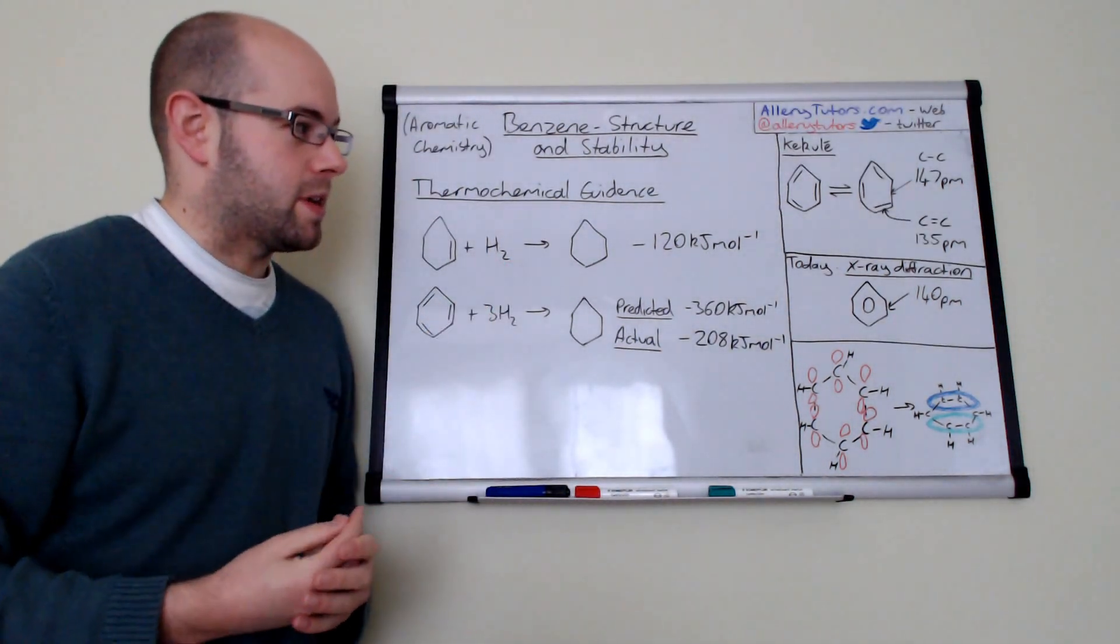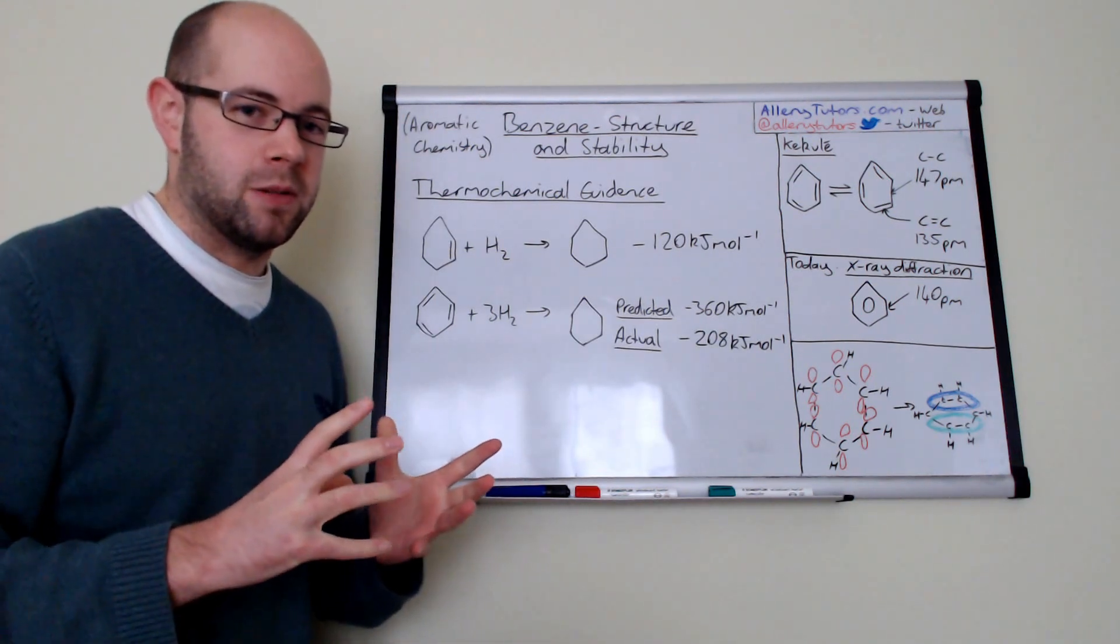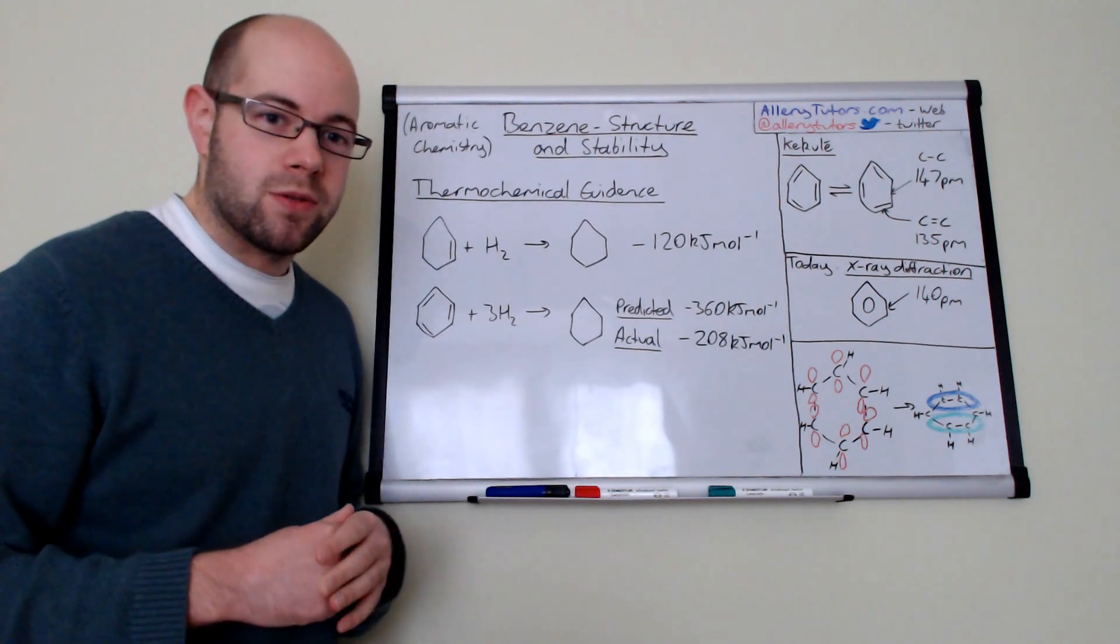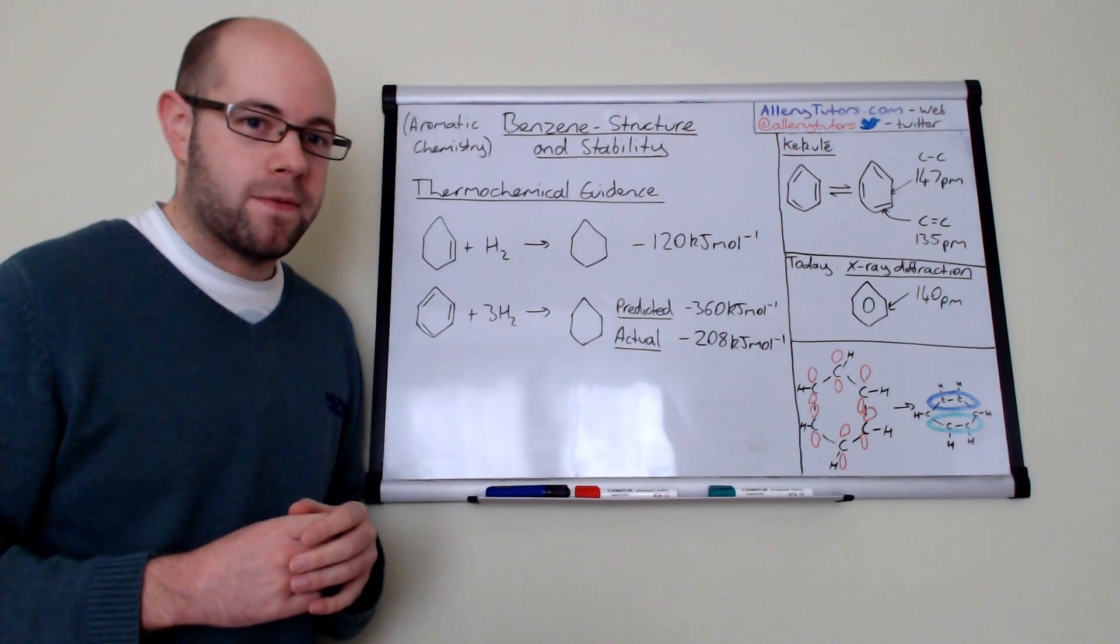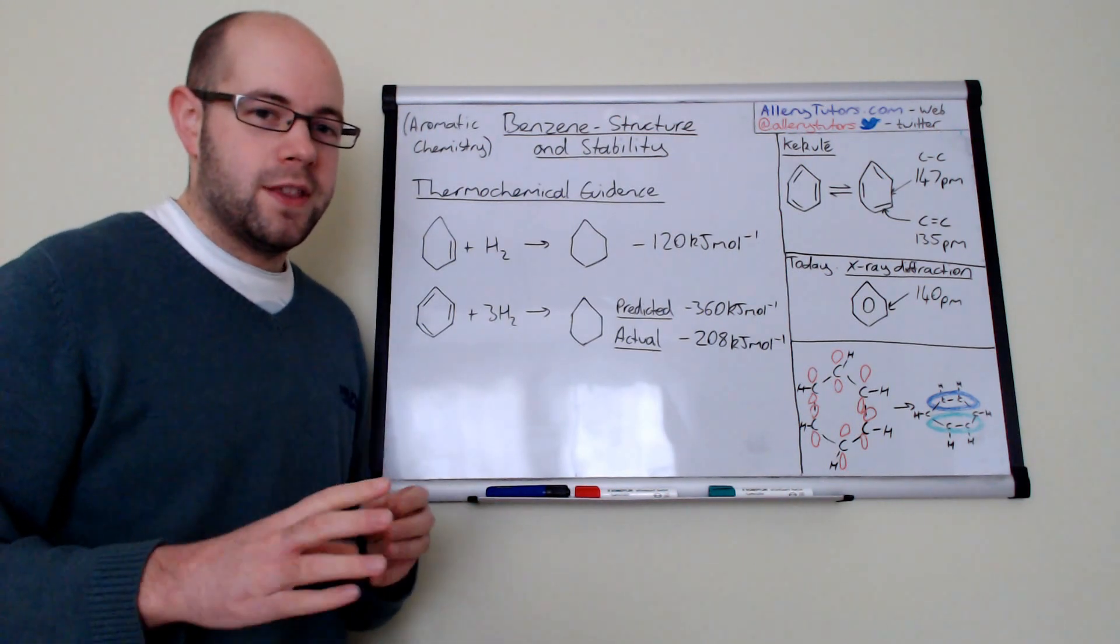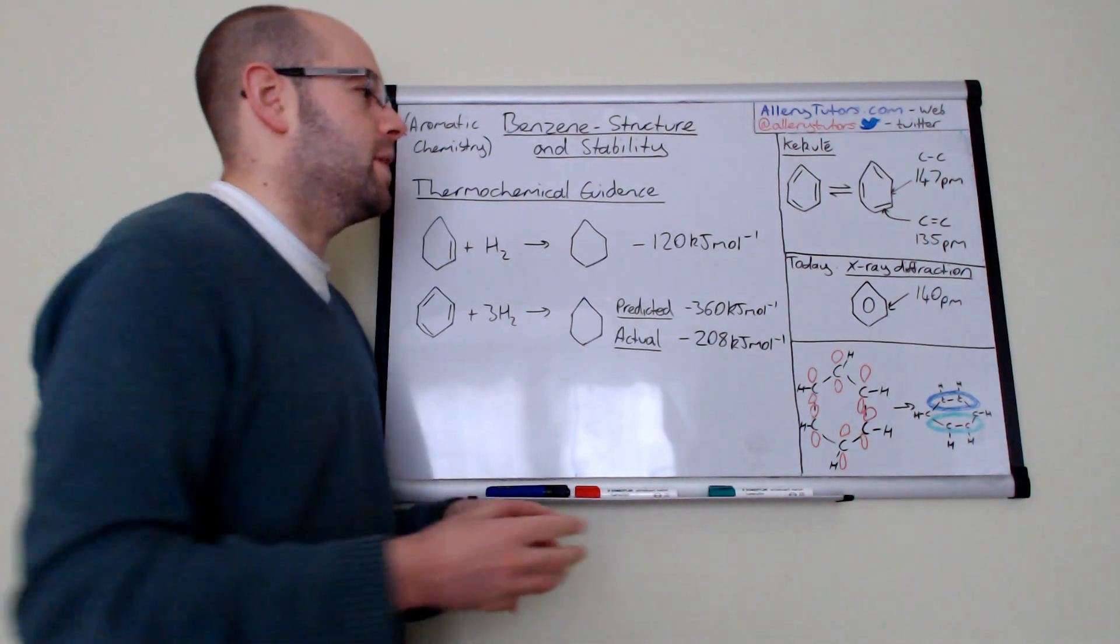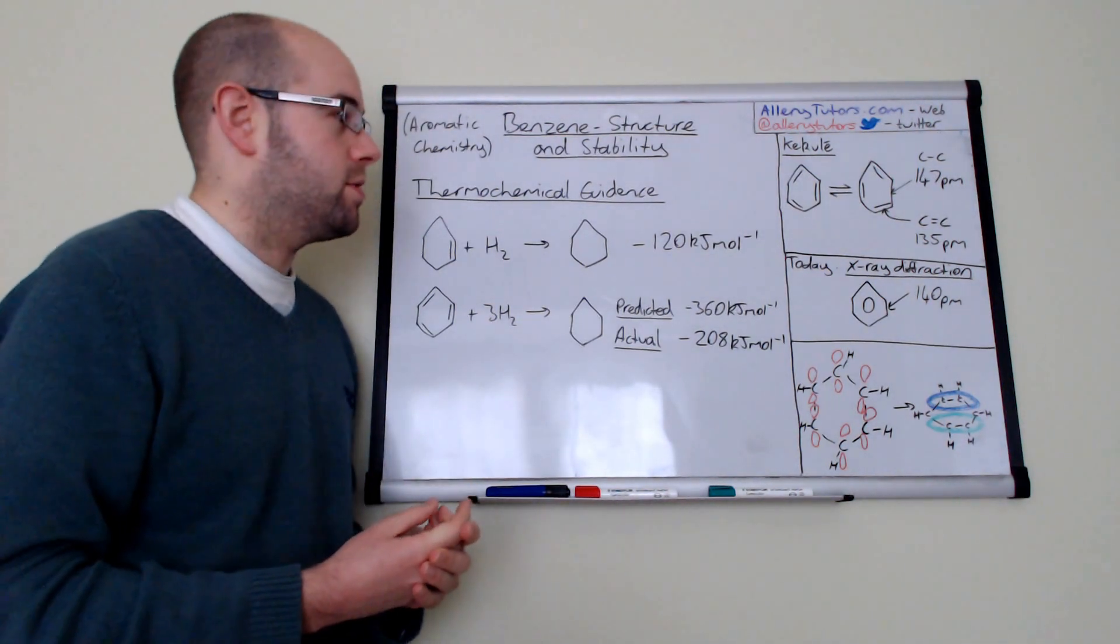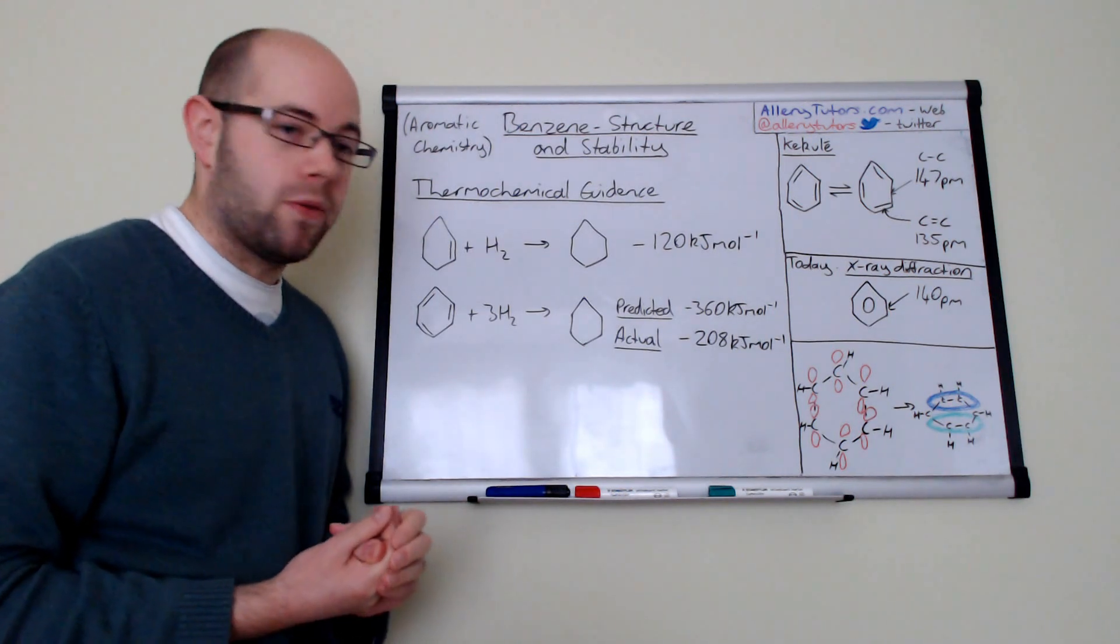We found out that actually it was a symmetrical molecule which immediately suggested that you couldn't have a double and a single bond system as Kekulé suggested. Through infrared radiation we discovered that the bonds were all oscillating at the same frequency, which suggested that benzene had bonds of equal length across the whole molecule. We actually worked out that the length of all the bonds in benzene through x-ray diffraction was 140 picometers in length.